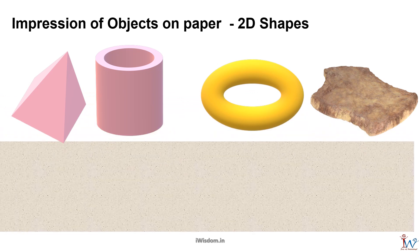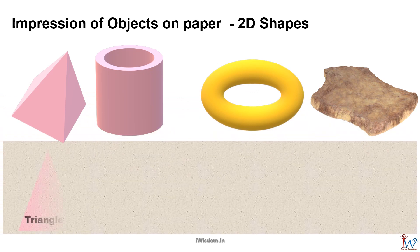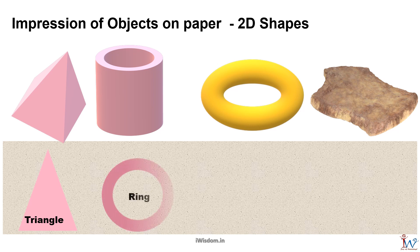Similarly here are the two dimensional shapes formed on paper when you press these objects on paper. Triangle, ring, and an irregular shape.